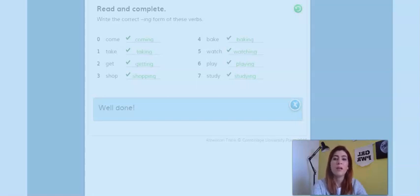Okay. Very well. So, here it is the answer of the activity. Let's read it together. So, take. Observe that. We took off the final E and then we just add ING. Take, taking. Get. We doubled the letter T. So, get, getting. Shop. The same thing. We doubled the P because it ends in CVC. Consonant, vowel, consonant. Shopping. Bake, baking. Watch, watching. Play, playing. And study, studying. So, this is exercise number two.